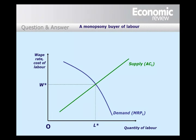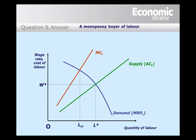But for a monopsony firm, the marginal cost of labor is higher than the average cost, because if the firm increases the wage to attract an additional worker, the higher wage must be paid to all workers. So the MCL lies above the ACL. The firm will hire labor up to the point where MCL equals the marginal revenue product, which is here at L_M. However, the firm only needs to pay a wage at W_M — the average cost of labor — and hence earns a surplus.